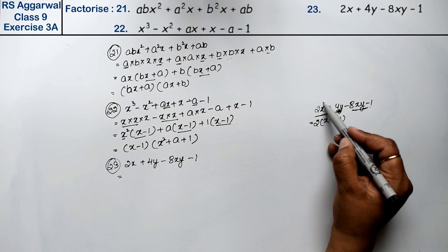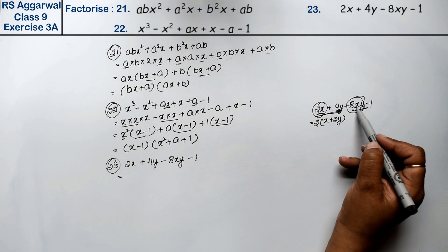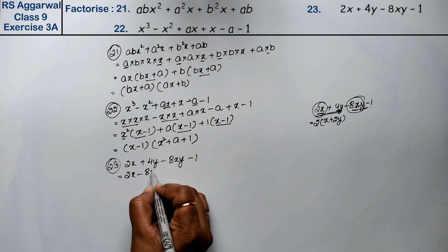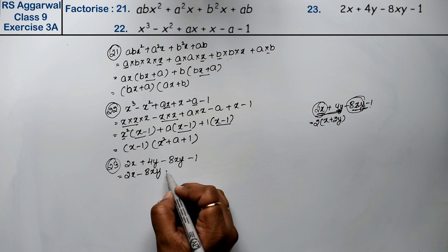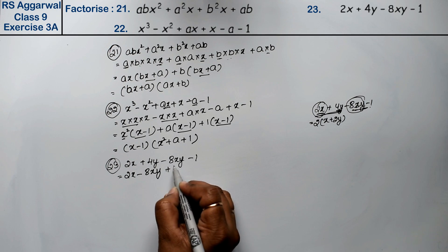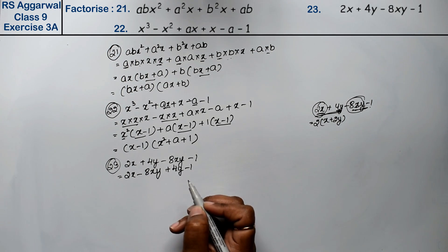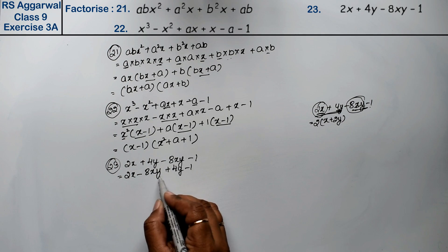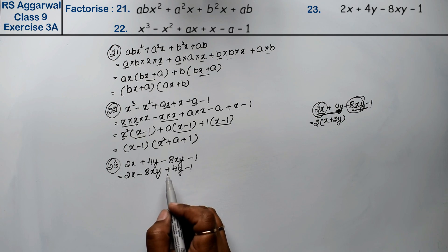So we will take a different pair: this term and this term together. We rearrange: 2x minus 8xy, then plus 4y minus 1. One method was to change the minus sign outside; another method is to interchange the terms. So we write: 2x minus 8xy, then minus 1 plus 4y.